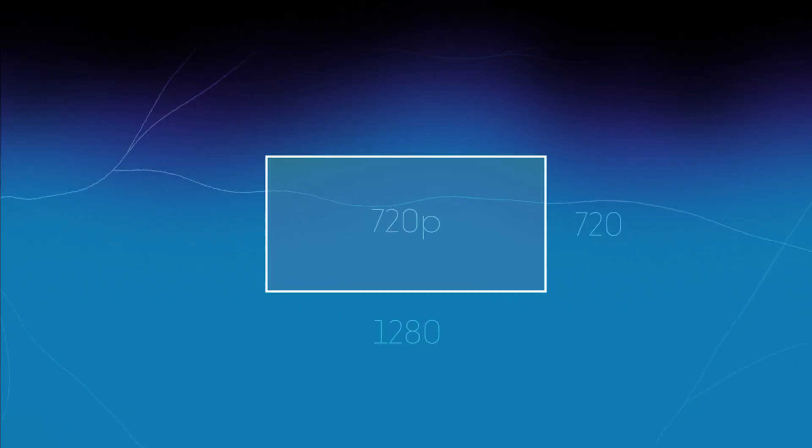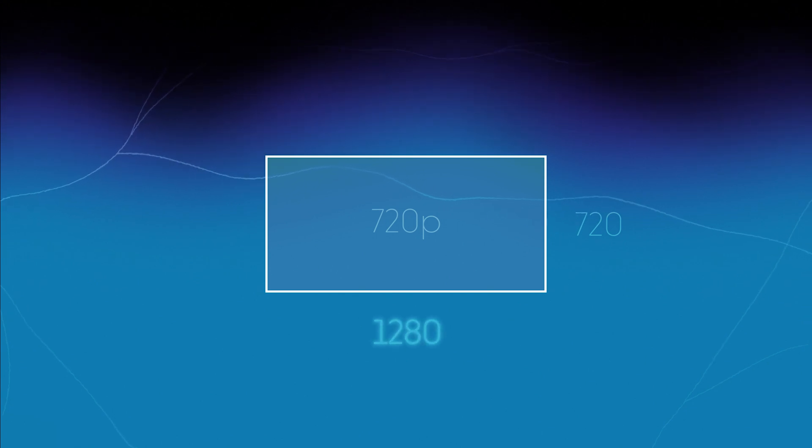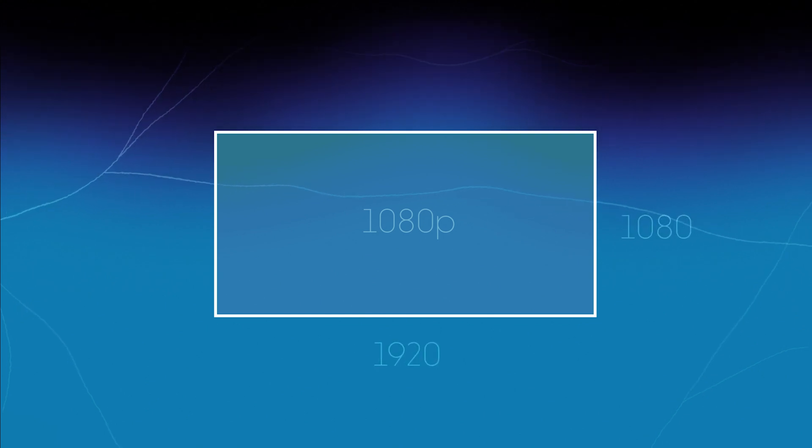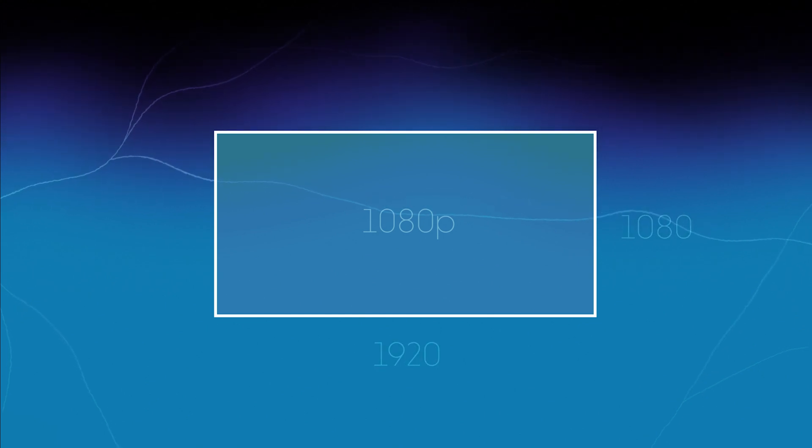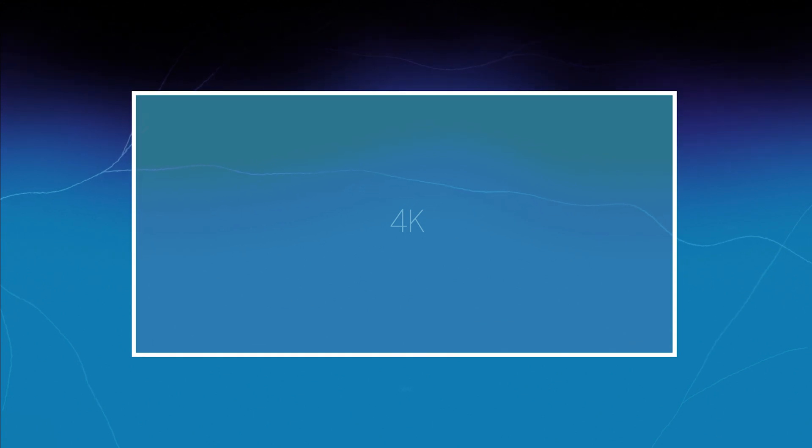When it comes to resolutions, there are different resolutions for different media, but I want to talk about what I consider to be the most common ones. The first is 720p, which has a resolution of 1280 by 720 — keep in mind that's width times height. Next is HD 1080p, which is 1920 by 1080. And next is 4K, with a resolution of 3840 by 2160.